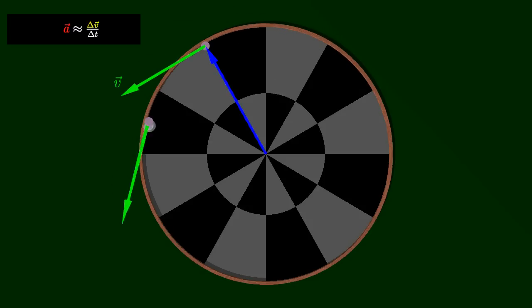The acceleration of the object is the rate of change of velocity with respect to time. The acceleration of the object can be estimated by looking at the change in velocity over a short interval of time.